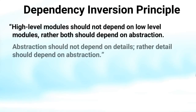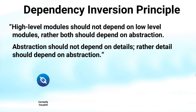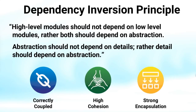And the last one is the Dependency Inversion Principle, which states high-level modules should not depend on low-level modules; rather, both should depend on abstraction. And abstraction should not depend on details; rather, details should depend on abstractions. This principle is primarily concerned with reducing dependencies among the code modules. The Dependency Inversion Principle will be a great help when it comes to understanding how to correctly tie a system together. If your implementation details depend on the higher-level abstractions, it will help you to get a system that is coupled correctly, and it will also influence the cohesion and encapsulation of that system.